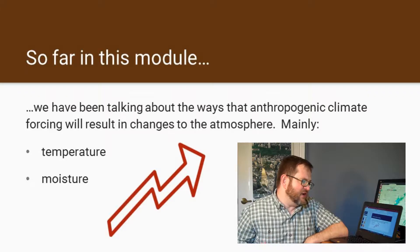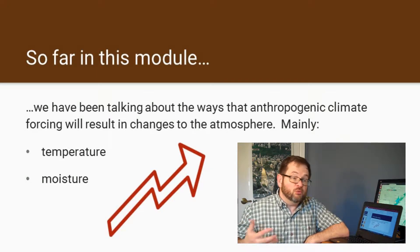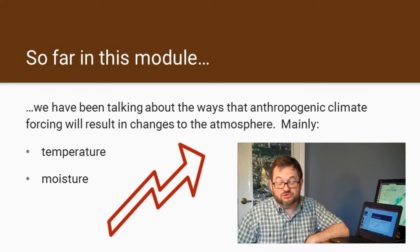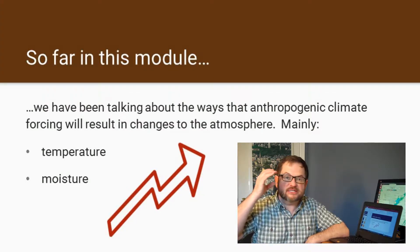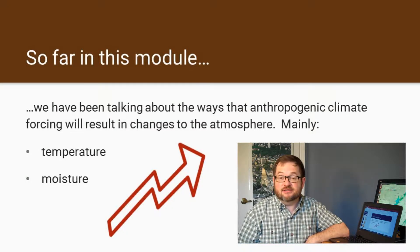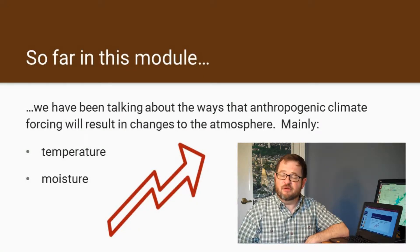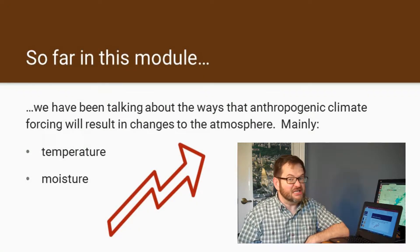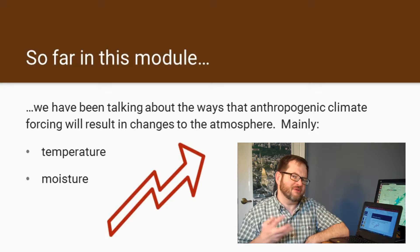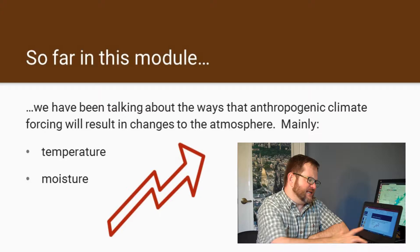So far in this module, we've been talking about the ways in which anthropogenic climate change forcing will be resulting in changes to the atmosphere. We had been focusing on the temperature changes and the changes to the moisture content of the atmosphere, which were both increasing. From the last module, that shouldn't be hugely surprising when you think about the water vapor feedback in climate.